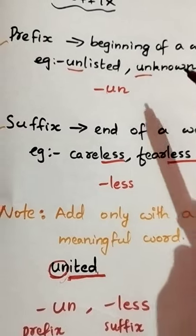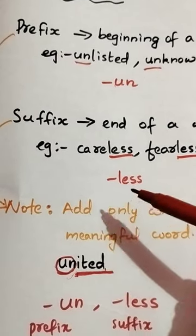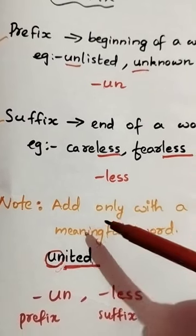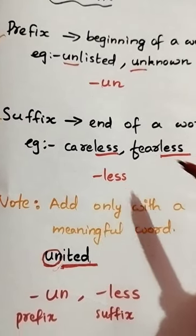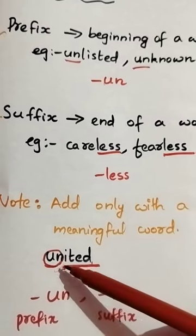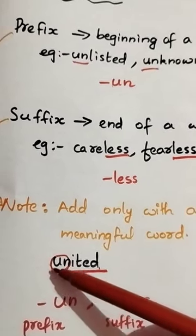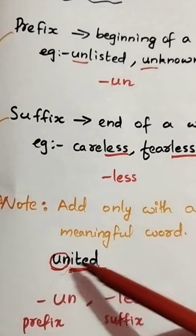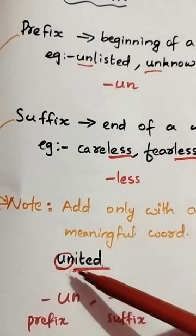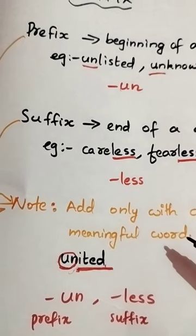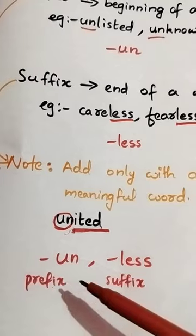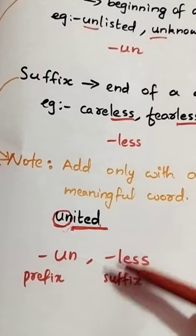An important point to remember about prefix and suffix: you should add it only with a meaningful word. For example, in 'United', there is 'UN', but 'ited' is not a meaningful word, so it is not a prefix. Share any words you know with a prefix and suffix in the comments.